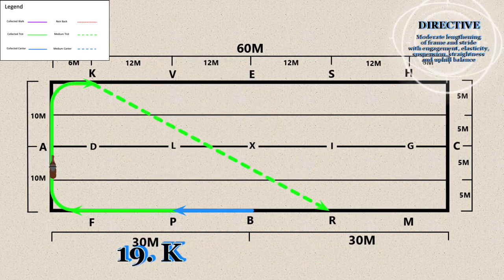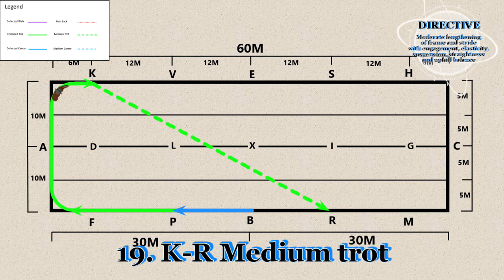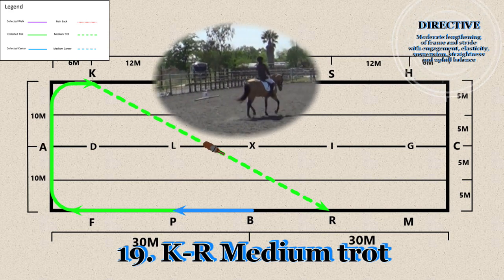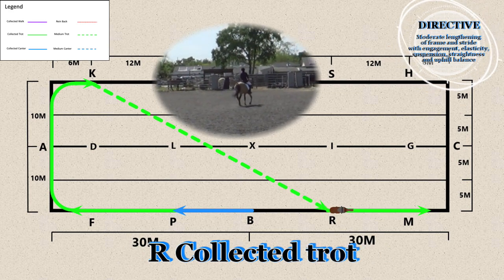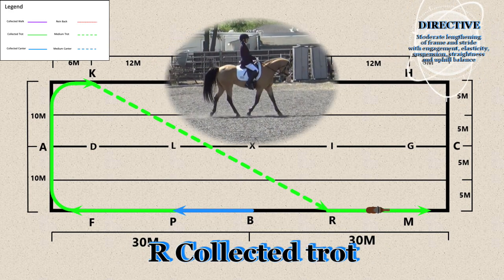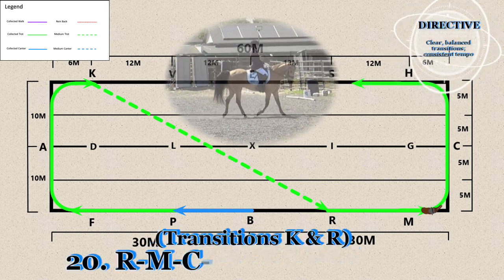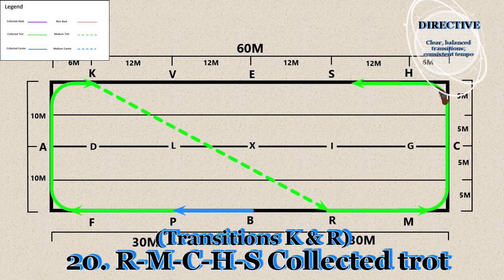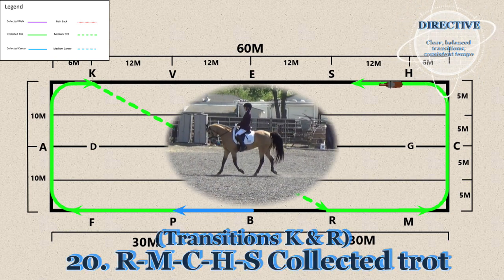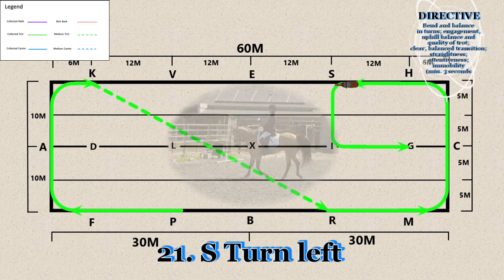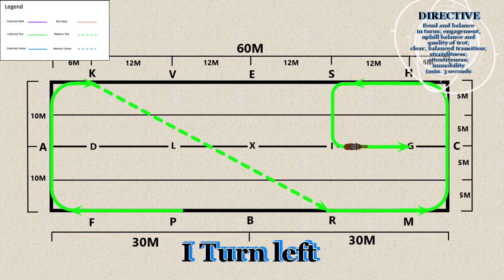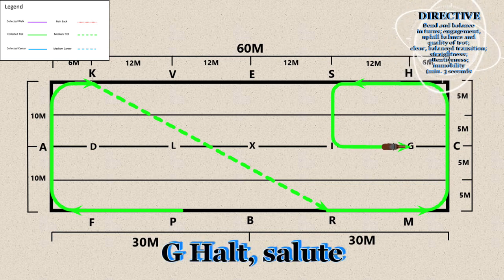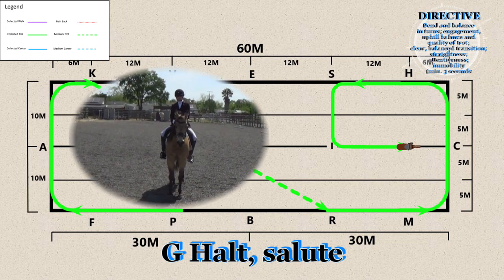19. K through R - Collected trot. 20. R M C H S - Collected trot. 21. S - Turn left.